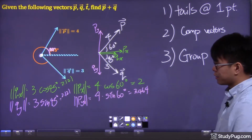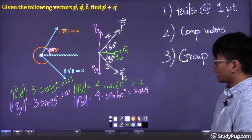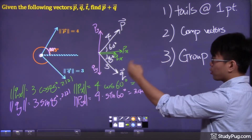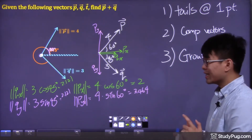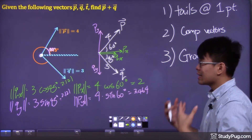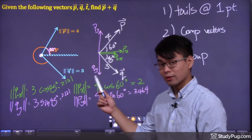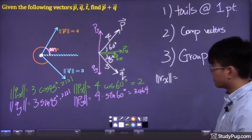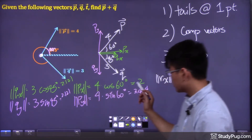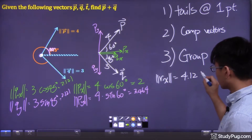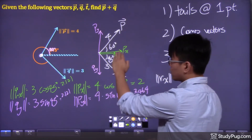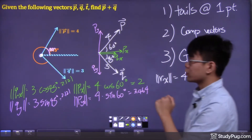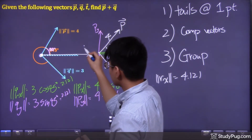We've now found the magnitudes of all the components. For step three: notice that p sub x and q sub x are both pointing to the right, so we find the sum of their magnitudes to get the x component of our resultant vector. The magnitude of r sub x equals 2 plus 2.121, which gives us 4.121, pointing to the right.